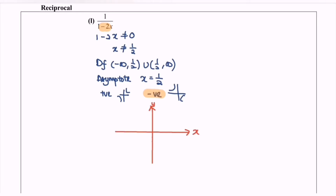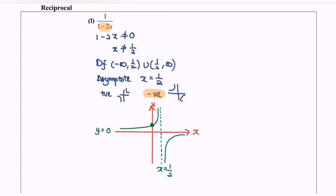Next, I'm going to sketch the graph. Given that 1 over 2 is an asymptote, meaning that the graph cannot pass by or cut the asymptote. Another asymptote will be y equals to 0. So the graph towards the left will be like this. Here we have the intersection point. In order to determine the intersection point, when x is equal to 0, y will be equal to 1, so we will have the point (0, 1).